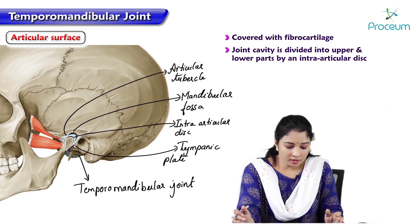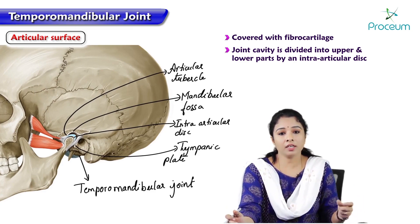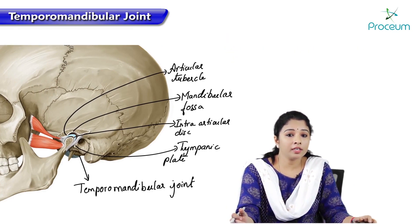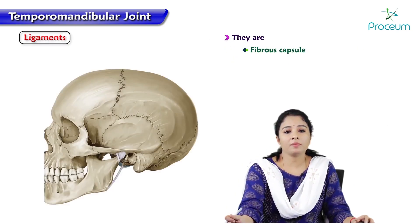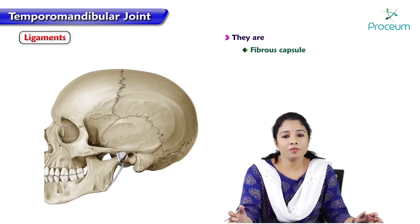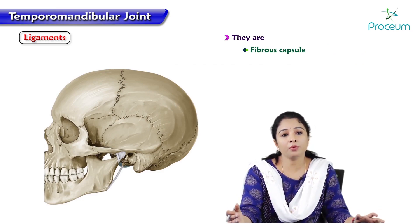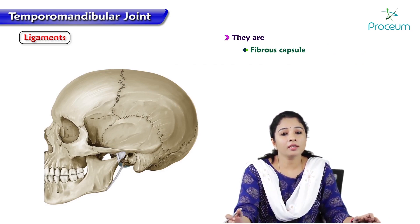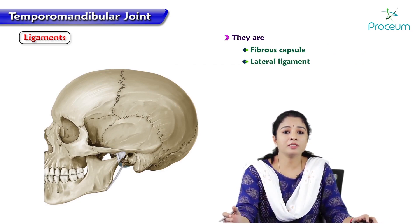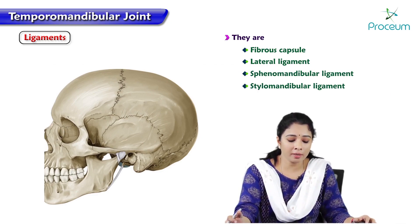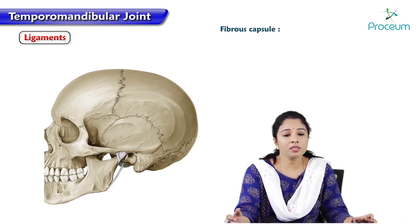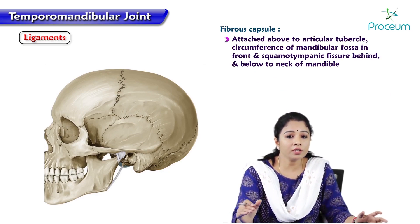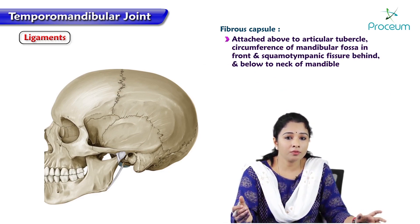Now let us understand the ligaments. Like any other synovial joint, the TMJ has a fibrous capsule. Other ligaments include the lateral ligament, the spinomandibular ligament, and the stylomandibular ligament. The fibrous capsule is attached above to the articular tubercle and the circumference of the mandibular fossa.